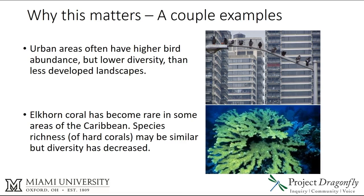Why this matters — a couple of quick examples. Urban areas often have higher bird abundance due to things like pigeons reaching super high abundances in cities, but they have lower overall diversity than less developed landscapes. If you just looked at abundance or species richness, they wouldn't tell the whole story. Same with corals in the Caribbean: elkhorn coral has become pretty rare, and while it still contributes to species richness, diversity has decreased as it's become less abundant and a smaller portion of the total.